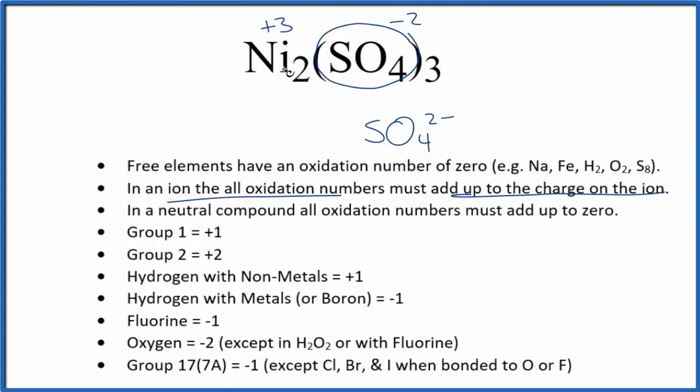Two times the three plus, that gives us plus six. We have three times the minus two, that gives us minus six. So everything adds up to zero.